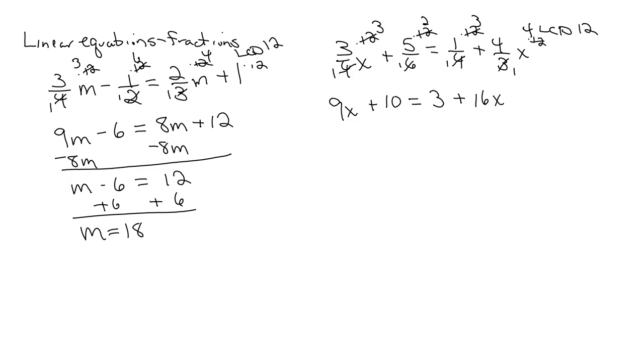So now that I have that, let's get our variables together. I like to take the smaller to the larger, so I'm going to subtract 9x from both sides. I have 10 equals 3 plus 7x. Subtract 3 from both sides. 7 equals 7x. Divide by 7. And 1 equals x.